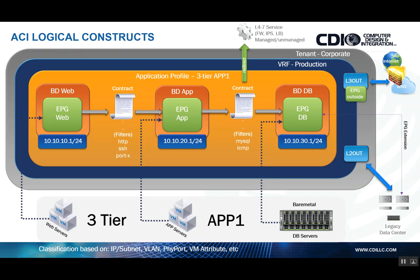In short, these are the more common logical constructs you need to be aware of. There are other things that could be factored in, such as subjects within contracts, labels, and different configurations for Layer 4 through 7 insertion, but we can cover those in another video. I hope this was educational, and if you are looking for more information or a proof of concept on Cisco ACI, please reach out to us at www.cdilc.com. Thank you.